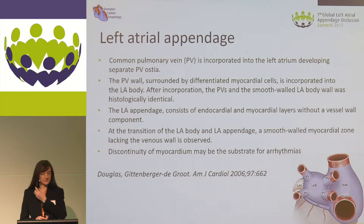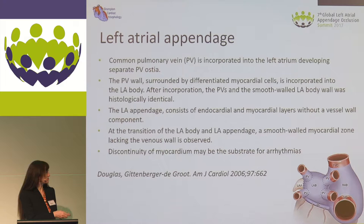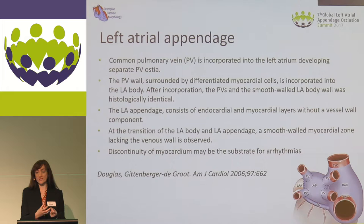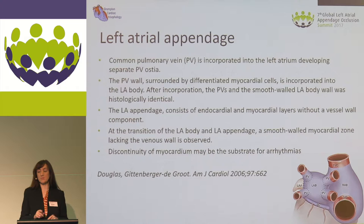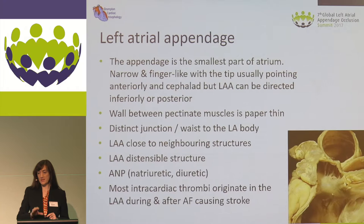How does it develop? We have a common pulmonary vein. It's incorporated into the main body, and you can see by this little diagram here, right down at the bottom, the pulmonary vein is surrounded by French-shaped myocardial cells, incorporated into the main body, and then we can see that there's a difference between the main body and the appendage. So there's a discontinuity of the myocardium between the appendage itself and the main body.